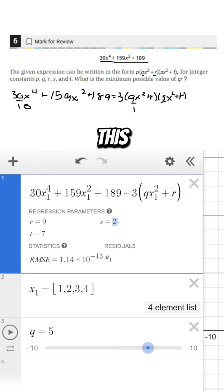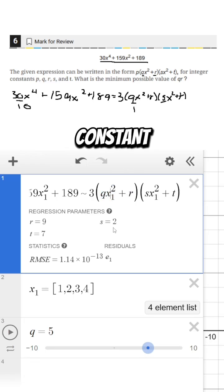But we also have this s and t. Now I know that it's not asking us for s and t but look, this factor of sx squared plus t is the same as the factor of qx squared plus r. It's just something x squared plus some constant.